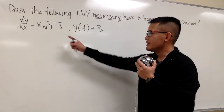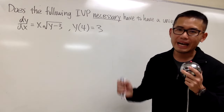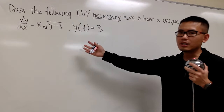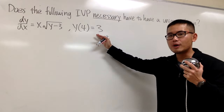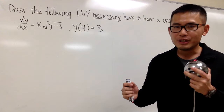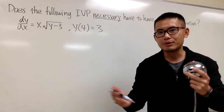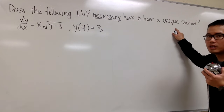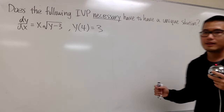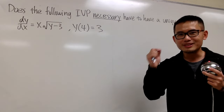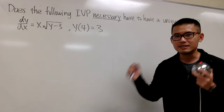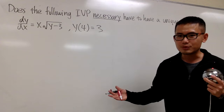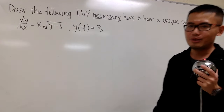We would like to know if this initial value problem has to have just one unique solution. Sometimes when you are trying to solve a differential equation along with an initial value, it's beneficial if you can tell how many solutions you are possibly going to have. We are just looking for if we have a unique solution or not. We can use the existence and uniqueness theorem for it. That's the point of this video — I will show you a few more examples after this as well.